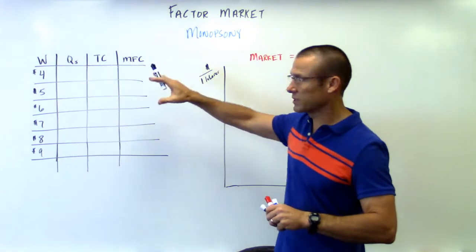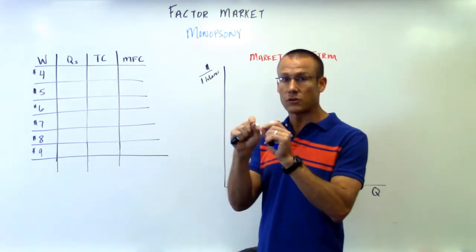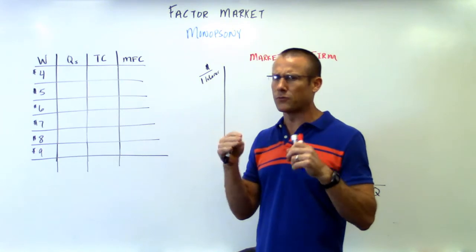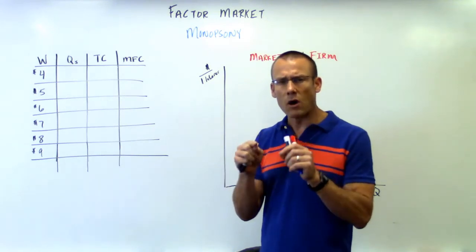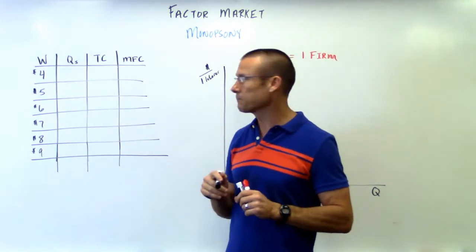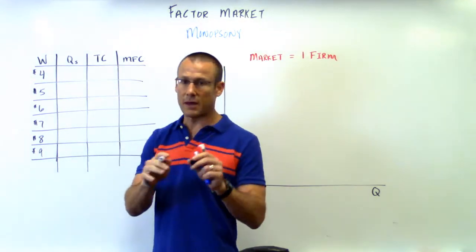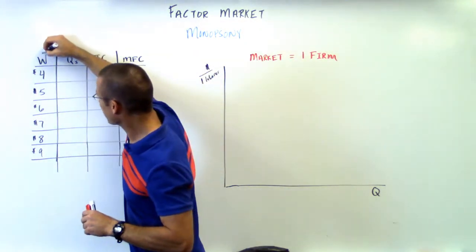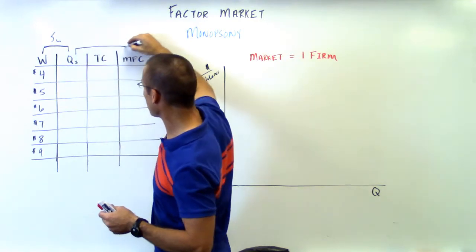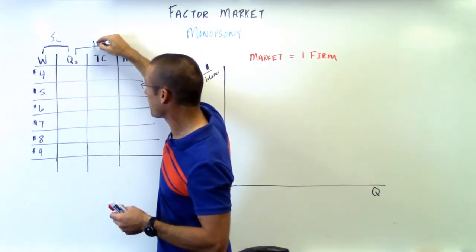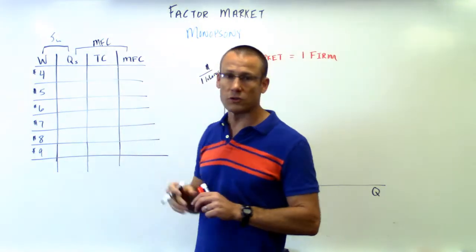So we've got a monopsony — one business is the only one hiring laborers. I want you to understand this weird thing that's going to happen in this graph: the marginal factor cost curve is going to split away from the supply curve. It should remind you of how in a monopoly the MR splits away from demand. To understand this, I've got a table. The wage and quantity supplied columns make up the supply of labor curve. The quantity and marginal factor cost column make up the marginal factor cost curve — that's what we want to keep an eye on.